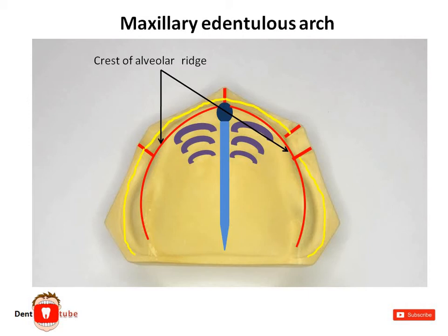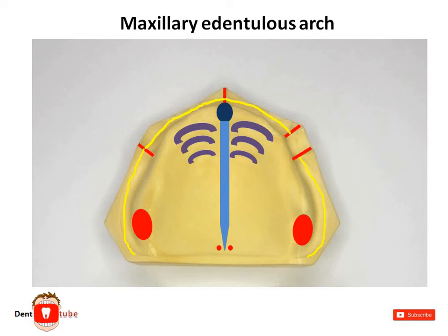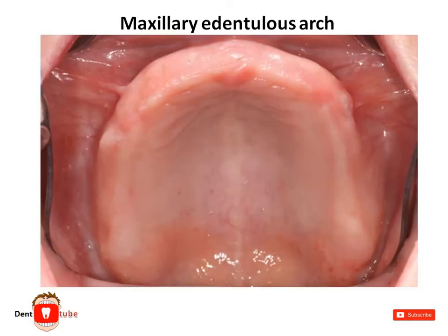The ducts of several mucosal glands coalesce forming the fovea palatinae. The bony extension of the residual ridge in the second and third molar region is the maxillary tuberosity. The depression situated between the maxillary tuberosity and the hamulus of the medial pterygoid plate is the hamular notch. The area of the palate that contains the posterior surface of the denture is known as the posterior palatal seal area.